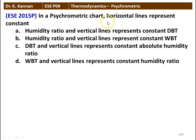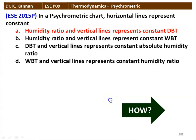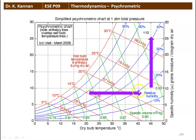Next question: in a psychrometric chart, horizontal lines represent constant humidity ratio and vertical lines represent constant dry bulb temperature. The correct answer is: horizontal lines represent the humidity ratio and vertical lines represent the constant dry bulb temperature. On the chart, dry bulb temperature is read vertically and specific humidity or humidity ratio is read horizontally.